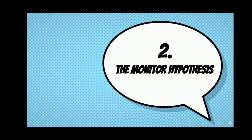The second hypothesis is the Monitor Hypothesis. The role of the Monitor Hypothesis is like a checker or a corrector. Based on the acquired system and learned system, the Monitor Hypothesis focuses on the learned system, which works as the corrector of the second language learner. Before the learner makes an utterance, he or she internally scans it for errors.